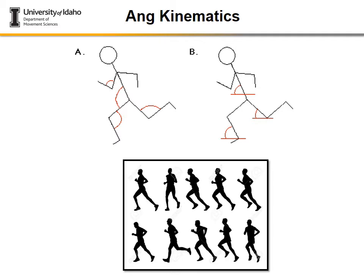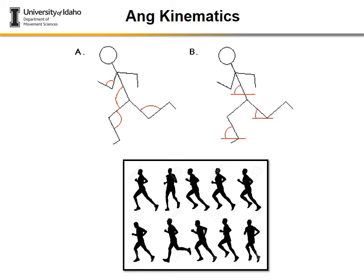We can describe a runner using both approaches. Depiction A uses the relative or joint angle methodology, showing hip angle, knee angle during stance and swing phase, and elbow angle. Depiction B uses the segmental approach, showing trunk inclination, thigh angle through the motion, and shank angle. For this runner traveling right to left, the shank angle is measured from the left horizontal at the distal end. You can specify your reference direction based on the direction of travel to describe the same motion in different ways.